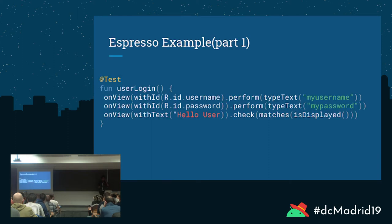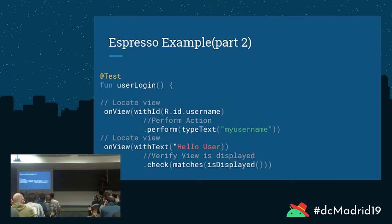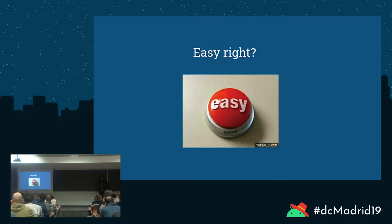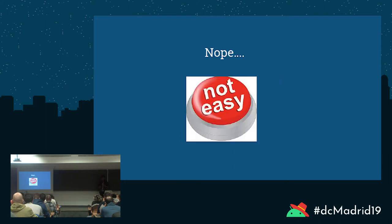So — writing Espresso tests. Here is a very basic example for login: onView with ID username, perform, typeText. What this test is doing is looking for a specific ID called username, entering text for the username and the password, and then doing a verification at the end. If you want to know more about what you can do with Espresso in terms of matchers and actions, there's the Espresso Cheat Sheet — you'll also find it on developers.android.com. With these two pieces of information, it seems pretty easy to write a user interface test. All you have to do is find an element and perform an action.